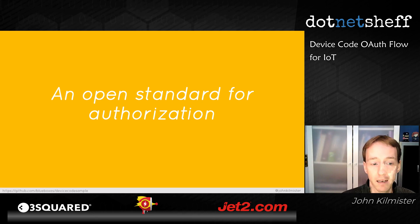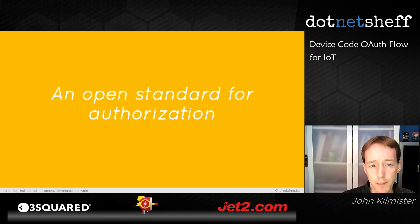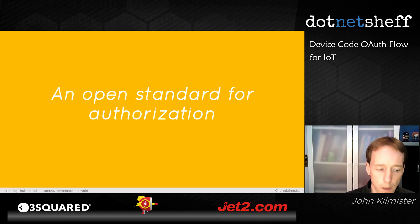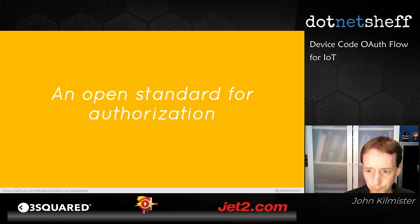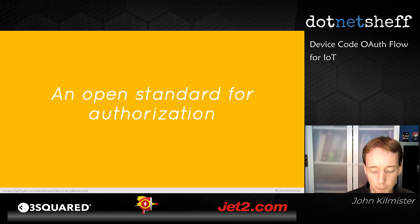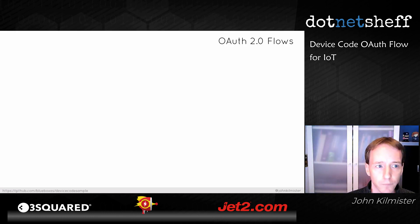If we're building an app that displays how many likes you have on Facebook, we don't want people putting their Facebook username and password into our app. We use an OAuth flow to redirect them to the Facebook website, they enter their credentials and give permission, and then we get back a token. The OAuth standards have been around since 2012, and the flows describe how we go and get that token.